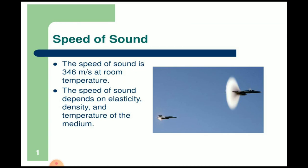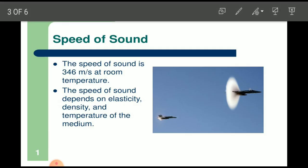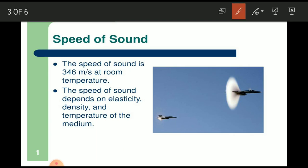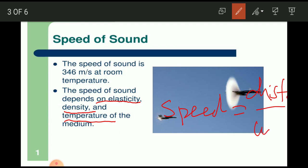Sound waves are compressional waves in nature. The speed of mechanical waves in a medium depends upon two characteristics of the medium: density and elasticity. The speed of sound depends upon elasticity of the medium, density of the medium, and temperature of the medium. It is the distance covered by sound waves per unit time. Speed is defined as v = s divided by t.